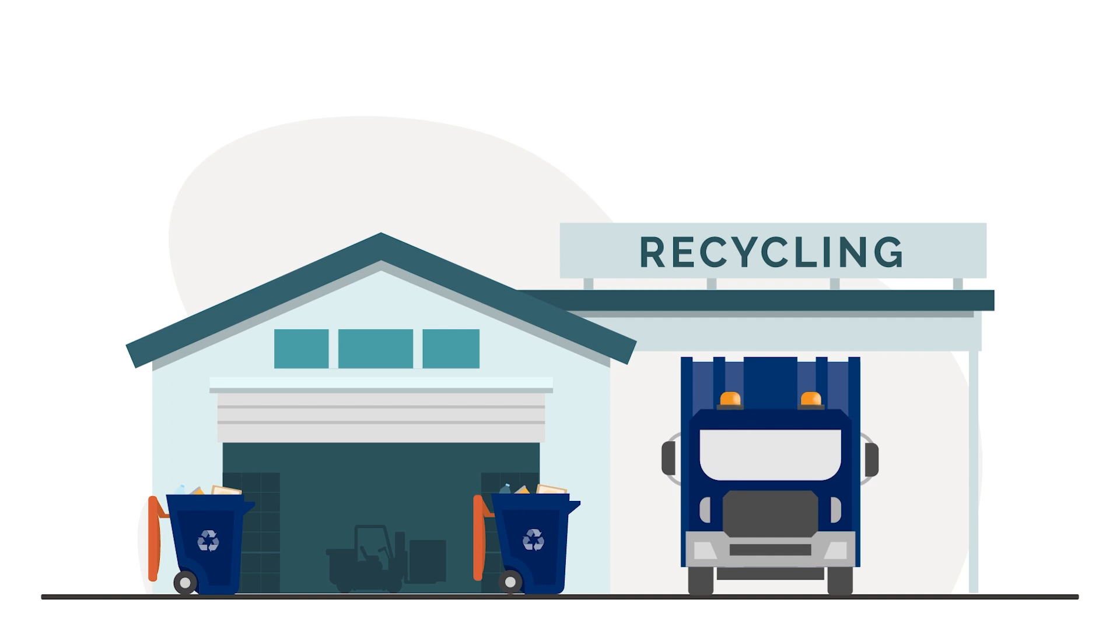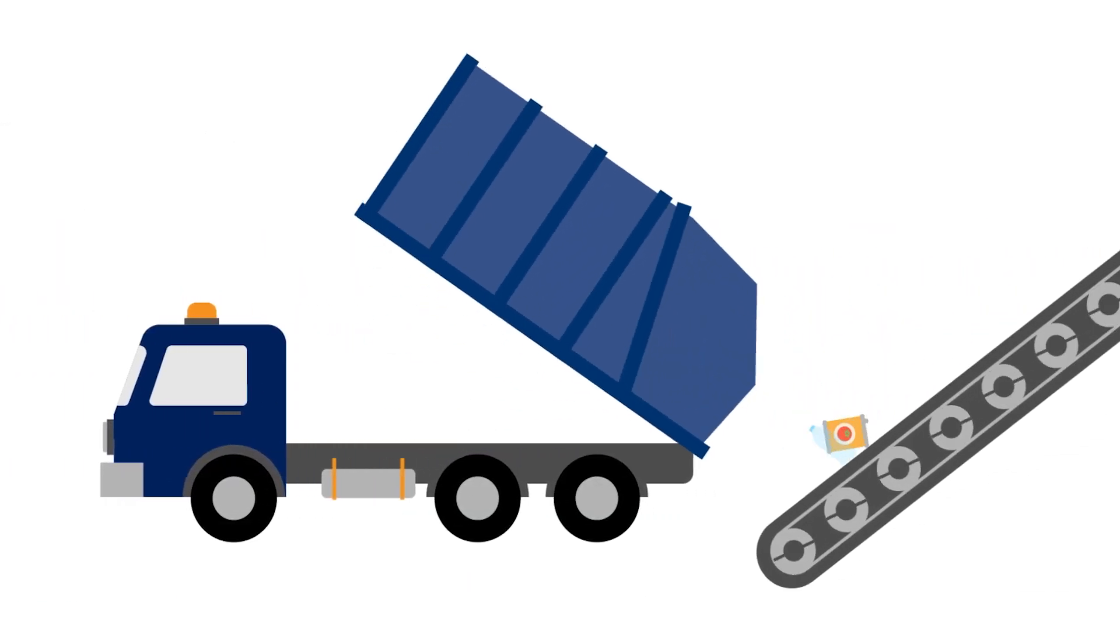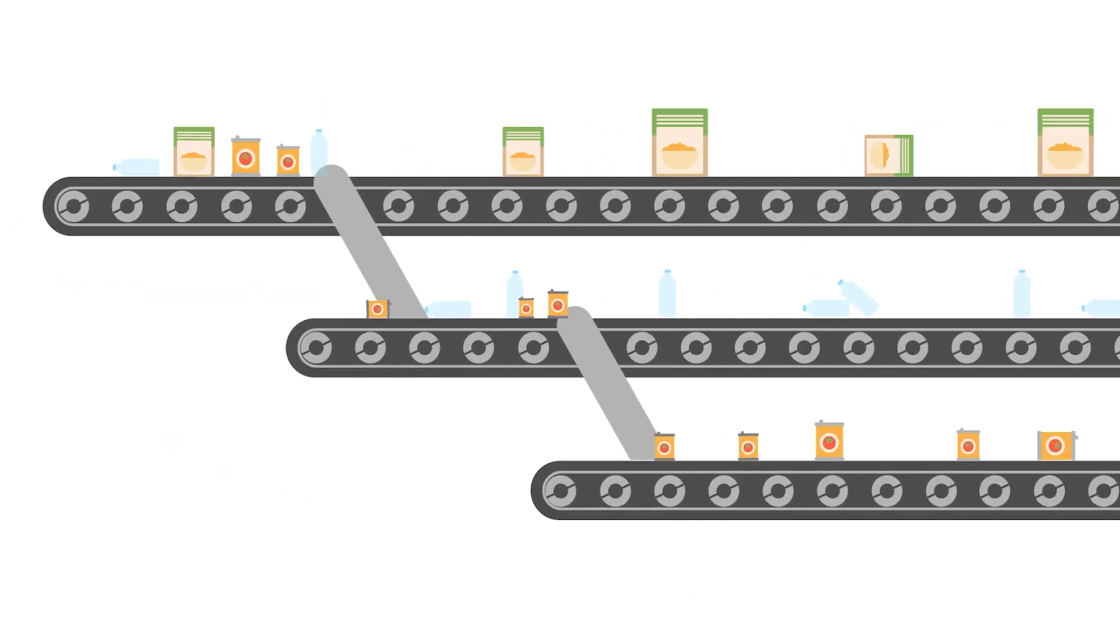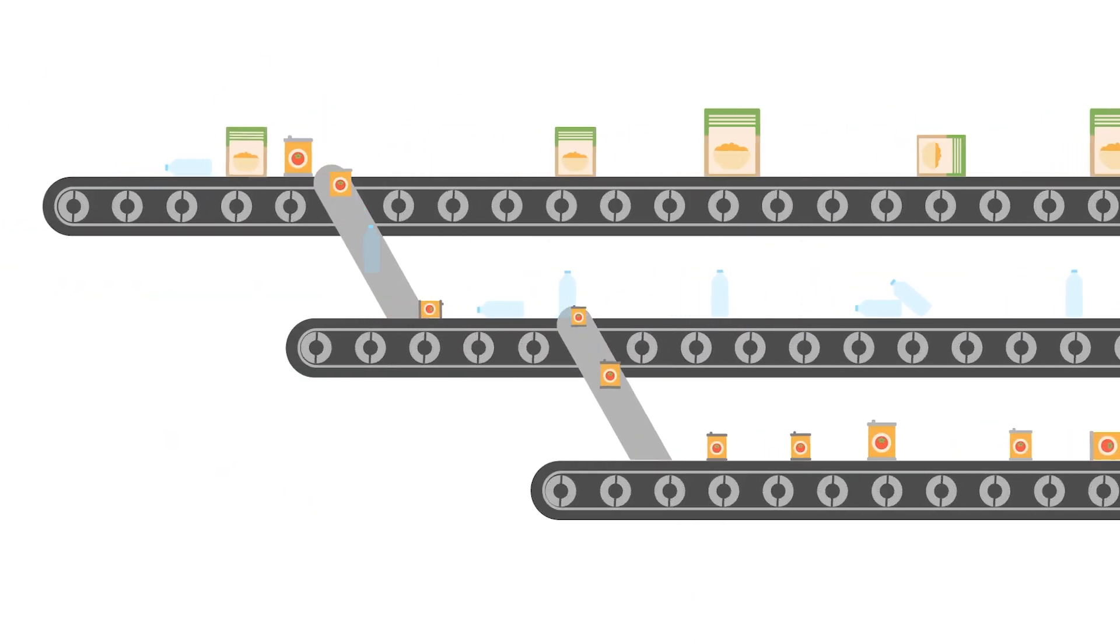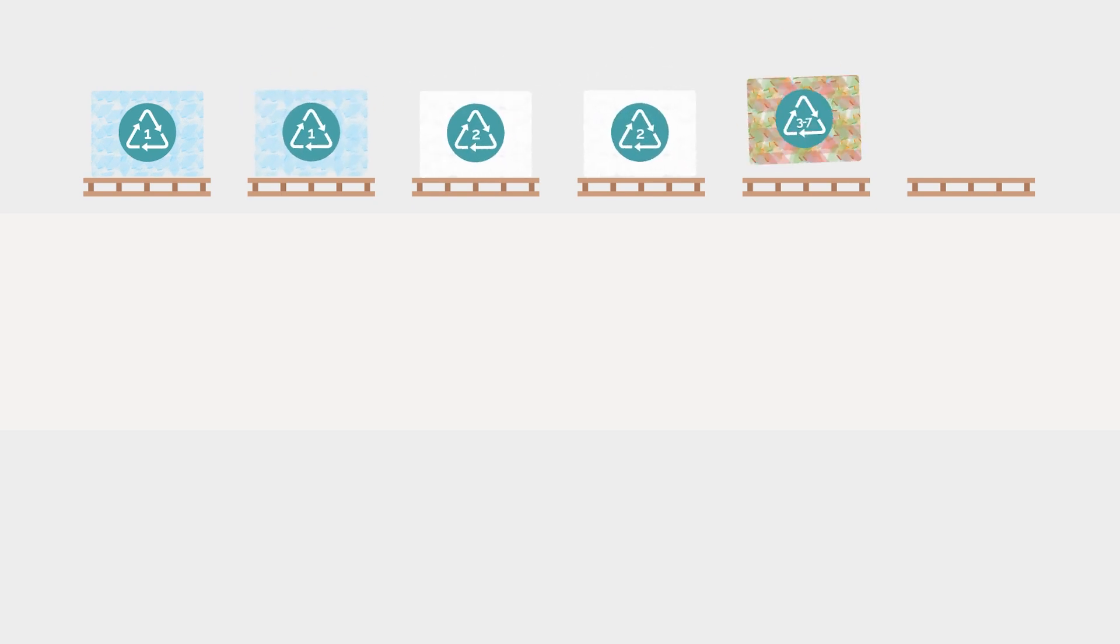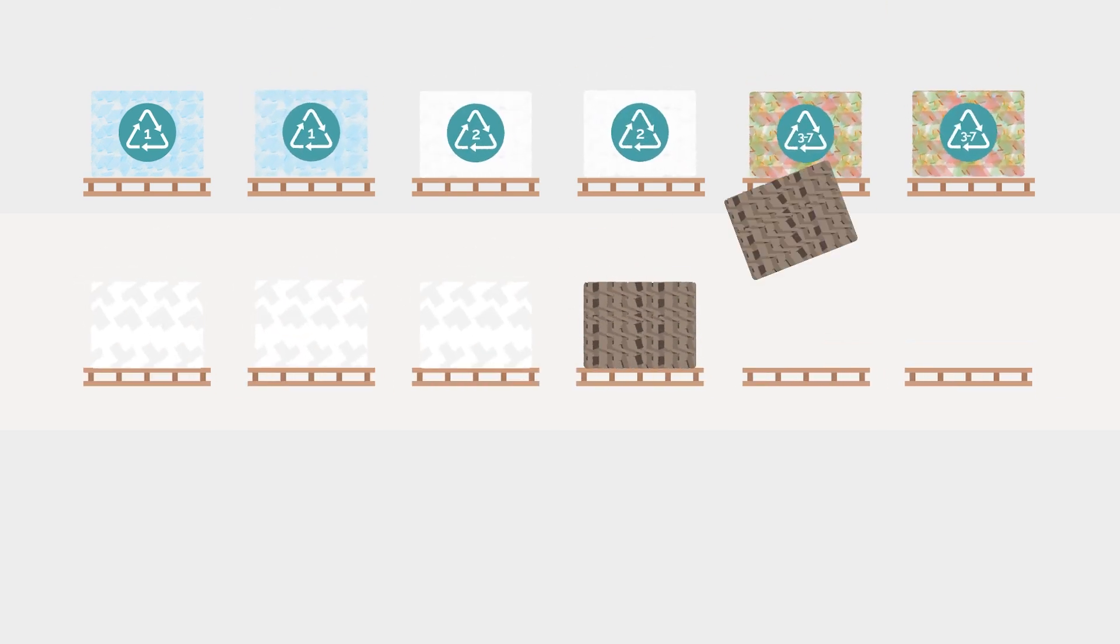Using both manual and machine sorting, workers at the facility sort incoming materials into specific categories like plastic type, metal type, paper, and corrugated cardboard. The materials are then tightly bound into bales and stored until they're shipped out for further processing.